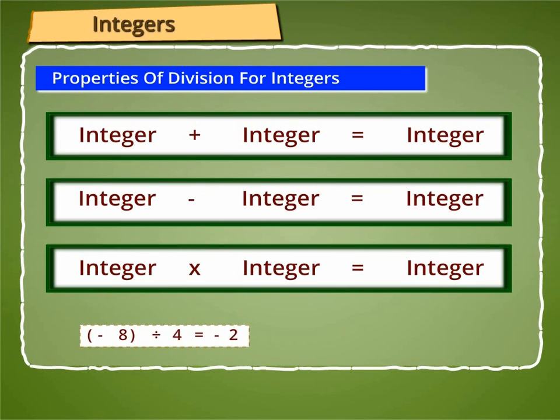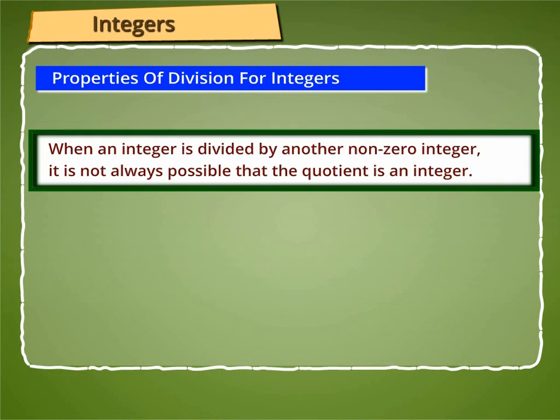We know that minus 8 divided by 4 is equal to minus 2, and minus 16 divided by minus 4 is equal to 4. Here, the quotients minus 2 and 4 in both the cases are integers. But when an integer is divided by another non-zero integer, it is not always possible that the quotient is an integer. For example, minus 5 divided by 3 is not an integer.